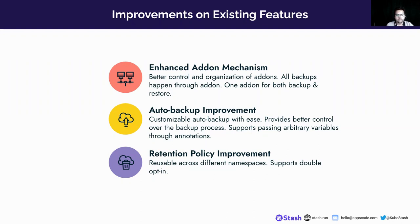The next improvement is auto backup. Auto backup is now more customizable and gives you better control over the backup process — it now supports passing arbitrary variables through annotations. There is also a retention policy improvement. We introduced a new CRD called Retention Policy that is reusable across different namespaces and also supports double opt-in. Retention policy now has a maximum duration field — if you set a maximum duration, snapshots will be outdated after that period and cleaned up by KubeStash. You can also set a retention policy for failed snapshots.